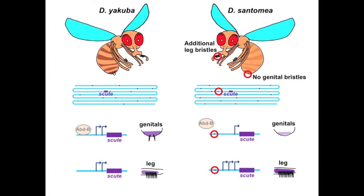In conclusion, we identified a single letter change in the DNA, which occurred during the evolution of Drosophila santomea, and this mutation contributed to both a loss of genital bristles and a gain of leg bristles. It's important to note that the effect of this mutation is small, and other mutations also contribute to the changes in leg and genital bristle number.